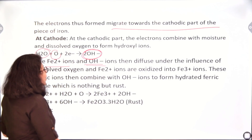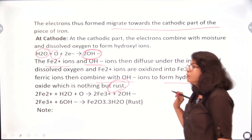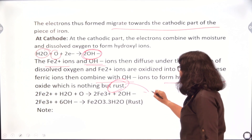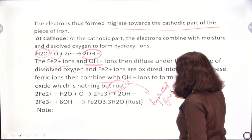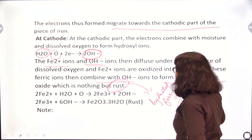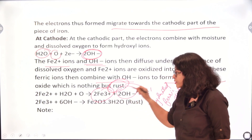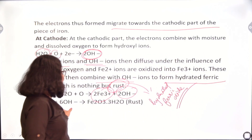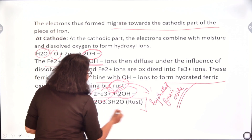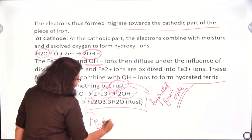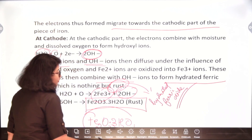These ferric ions then combine with OH⁻ ions to form hydrated ferric oxide — which is rust. So if someone asks what is rust, rust is basically hydrated ferric oxide. Fe²⁺ in the presence of water and oxygen gets converted to Fe³⁺ and OH⁻. Fe³⁺ will react with OH⁻ to form Fe₂O₃·3H₂O — and this is the chemical formula of rust. You have to remember this: Fe₂O₃·3H₂O is rust.